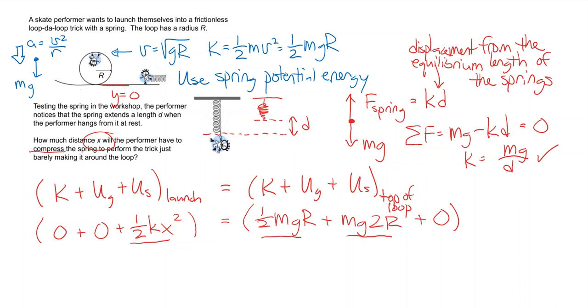All we have to do then is solve for x. Let's plug in what we know about k. So we have one half, and k was mg over d, x squared is equal to one half mg r plus mg 2r. The mg's both cancel; we divide both sides by mg.